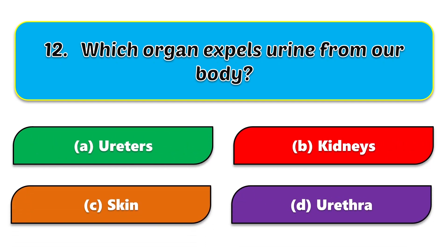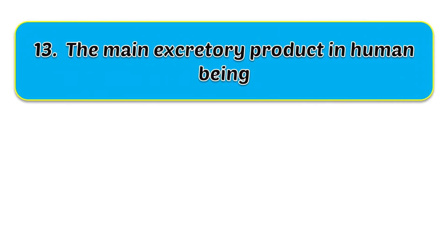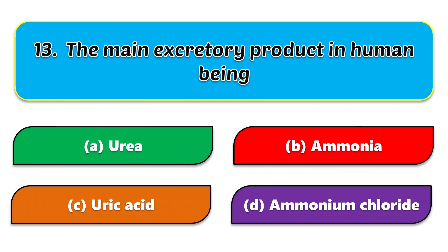Twelfth question: which organ expels urine from our body? The options are ureters, kidneys, skin, and urethra. The correct answer is urethra. Thirteenth question: the main excretory product in human beings is — options are urea, ammonia, uric acid, and ammonium chloride.